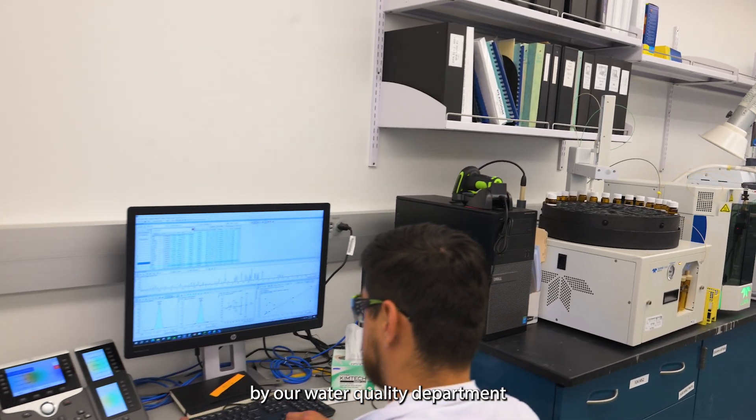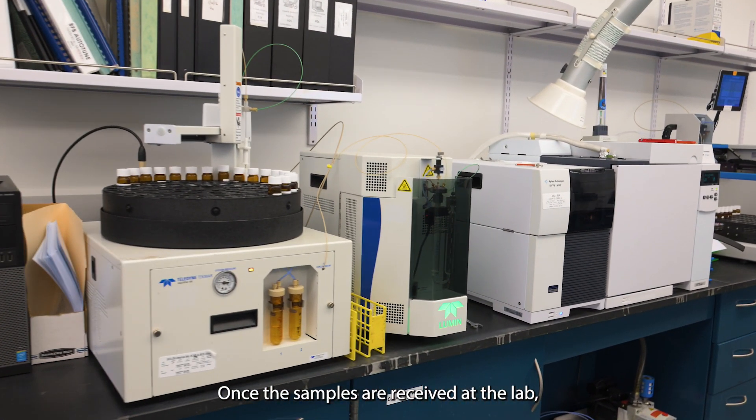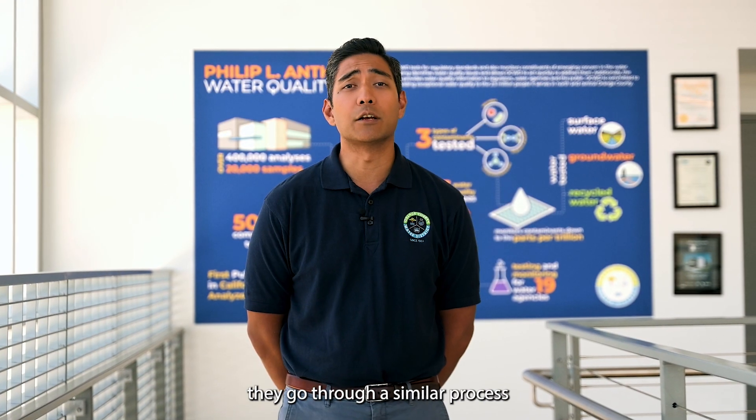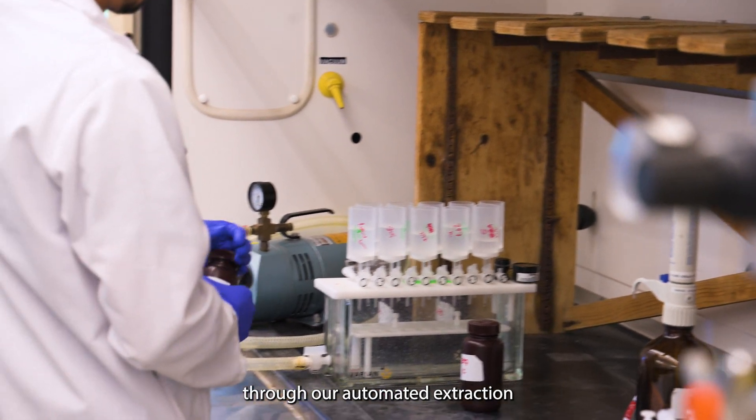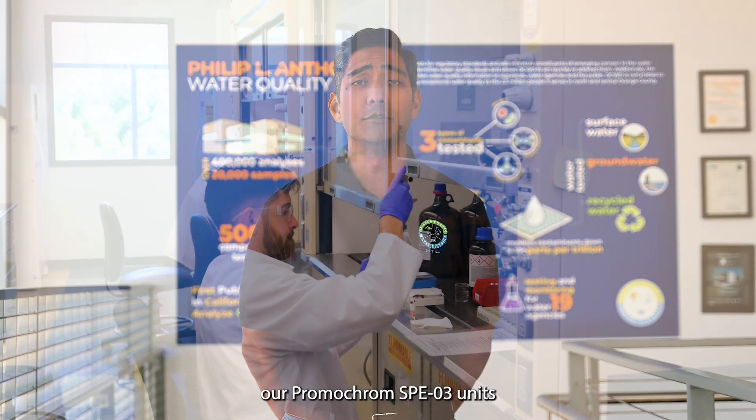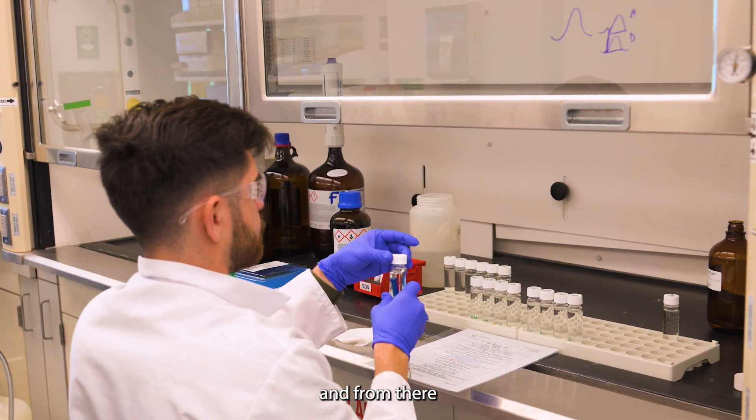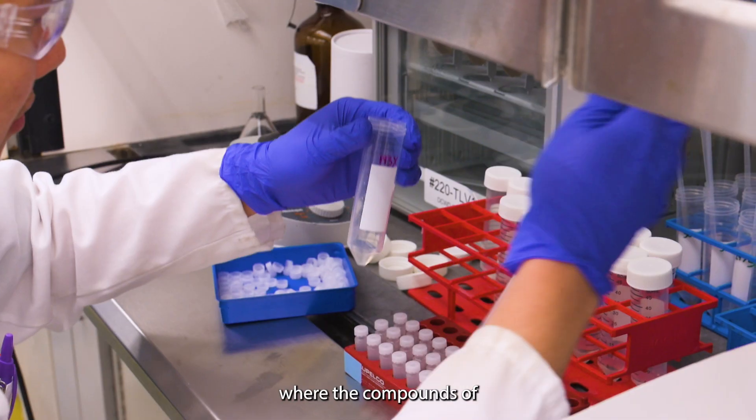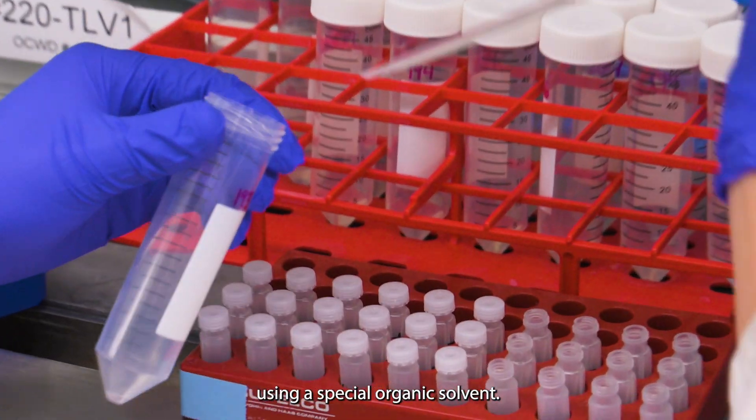Our samples are collected by our water quality department and then brought over to the lab. Once our samples are received, the samples that typically go on to our SCIEX LCMS instruments go through a similar process where they are passed through our automated extraction units, either our Promochrom SP03 units or our AutoTrace 280 units. The samples are passed through a specialized type of cartridge where the compounds of concern are captured and then pulled off using a special organic solvent.